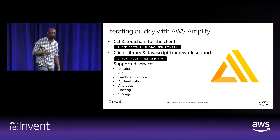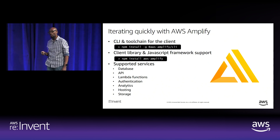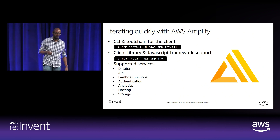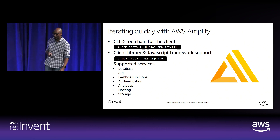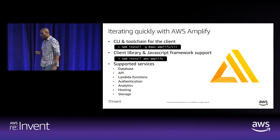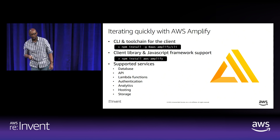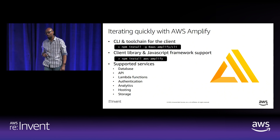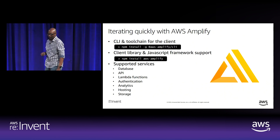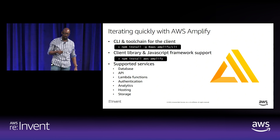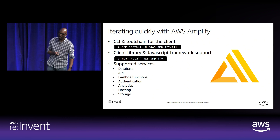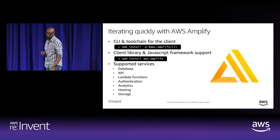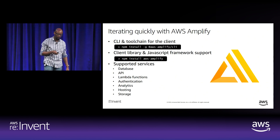The AWS Amplify CLI makes it really easy to get started with front-end development. Whether you are starting an Angular, React, React Native, or Vue project, it is the toolchain to use. It makes it a breeze to deploy and manage resources in your AWS account. You can get started with it by simply doing npm install AWS Amplify CLI. AWS also provides the Amplify SDK, which makes it easy for your application to interact with those resources. It supports multiple categories of functions — database, API, Lambda function, authentication, and others — and is continuously updated with new capabilities.